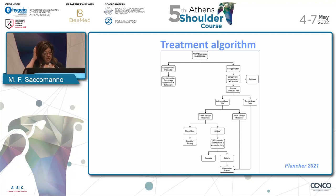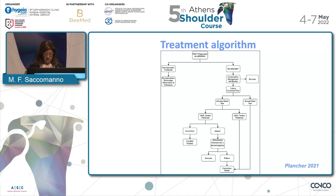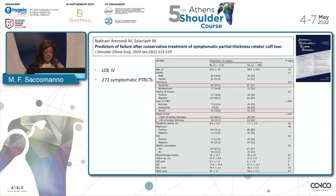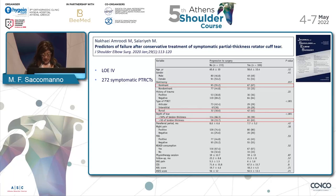A reasonable treatment algorithm suggests conservative management for at least three to six months in all cases, regardless of whether it's a high-grade or low-grade tear, and regardless of articular or bursal side. Surgery is considered only if conservative treatment fails. Predictors of failure after conservative treatment include having the dominant side affected, a bursal-sided tear, and of course a high-grade tear — patients with these factors should be counselled that surgery may ultimately be needed.